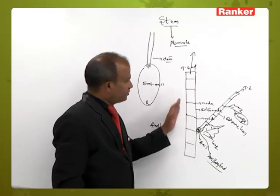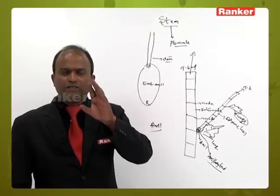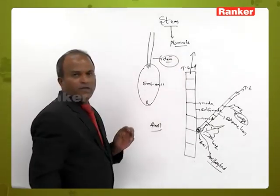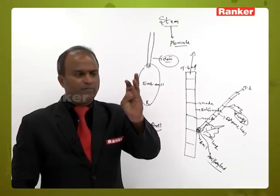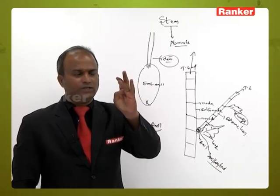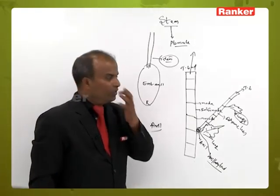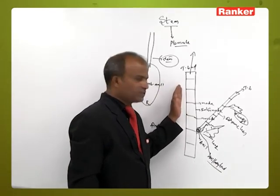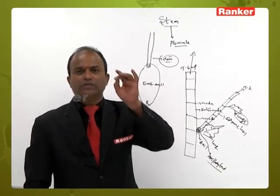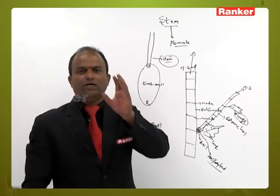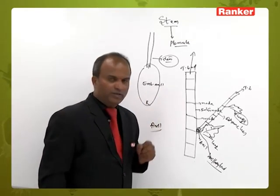The main axis in the shoot system is the stem. The stem bears leaves, axillary buds, terminal buds, branches, flowers, fruits, and seeds enclosed within the fruits.